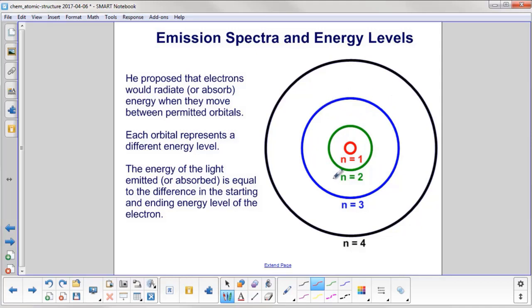And we have each orbital representing a different energy level. The energy of the light emitted, that's when you lose energy, or absorbed when the electrons gain energy, is equal to the difference in the starting and ending energy level of the electron.